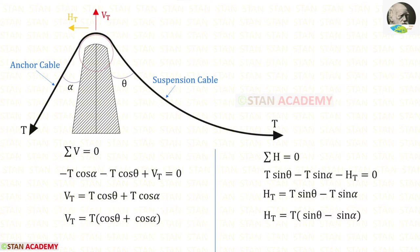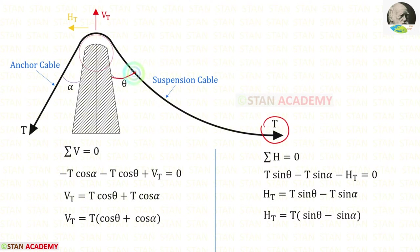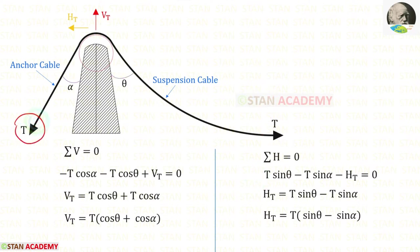Now let us apply the rule sigma H equals zero and find Ht. We have to resolve this force into horizontal. Here the angle is theta, so when we resolve in the horizontal we will get T sin theta. Since it is acting towards the right side it should be positive. In the similar way we have to resolve this force into horizontal. Here the angle is alpha, so when we resolve it in the horizontal direction we will get T sin alpha. Since it is acting towards the left side it should be negative.